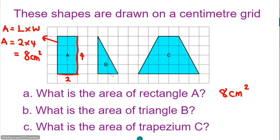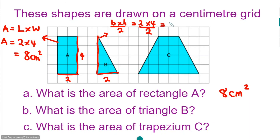For the triangle, the area of a triangle is base times height divided by 2. The base is 2 and the vertical height counts 1, 2, 3, 4. So we have 2 times 4 divided by 2, which gives 4 cm squared. The area of this triangle is 4 cm squared.